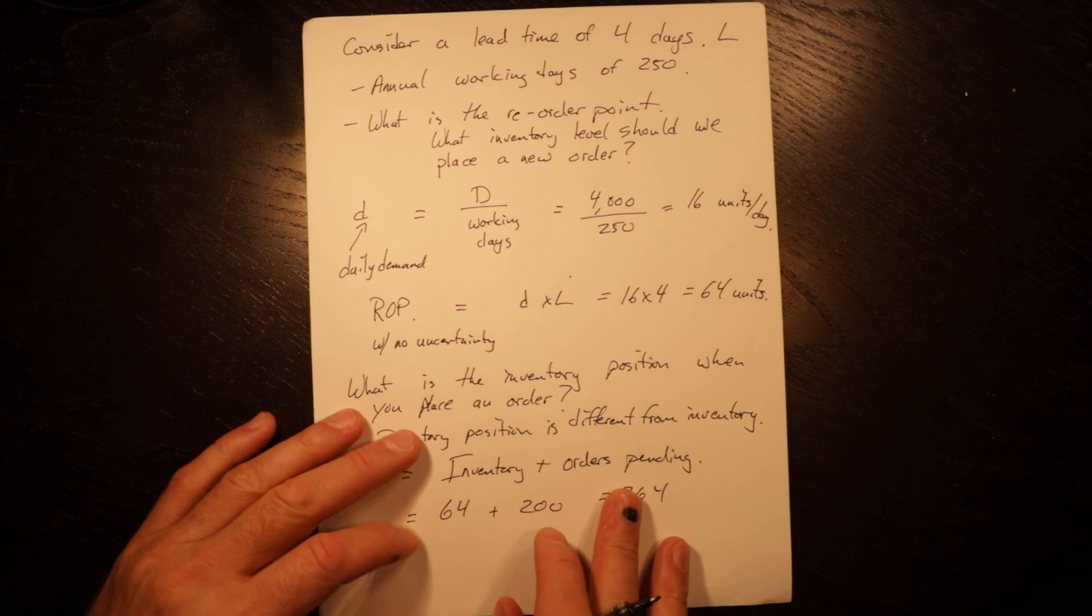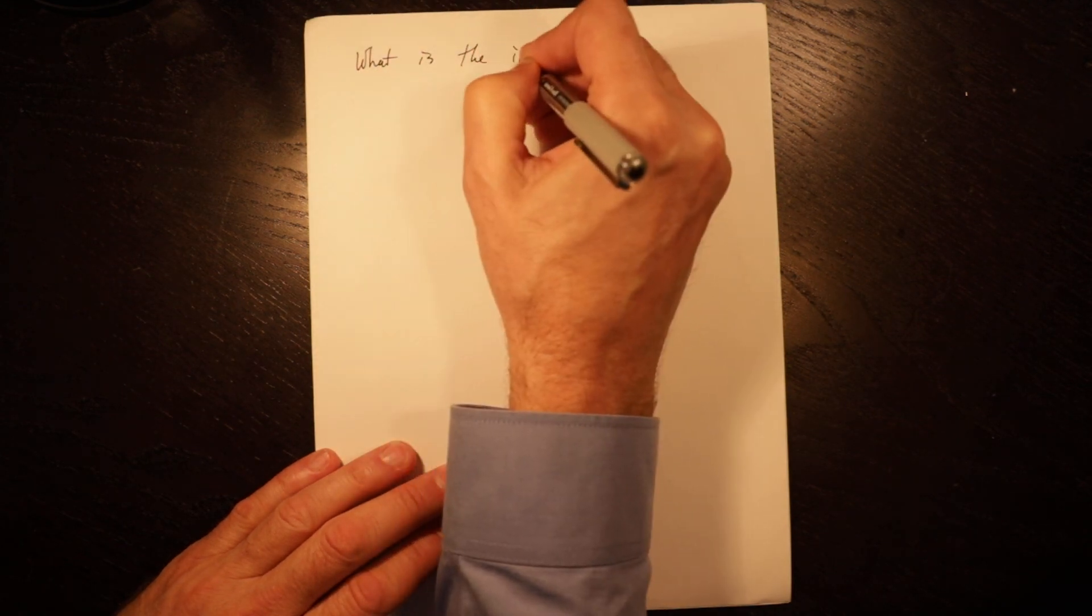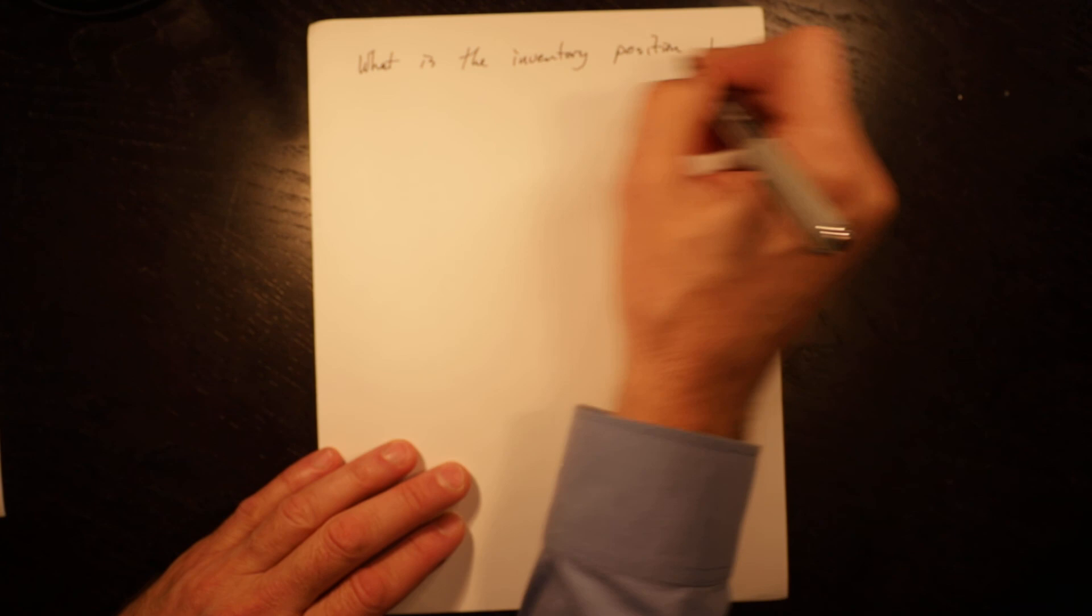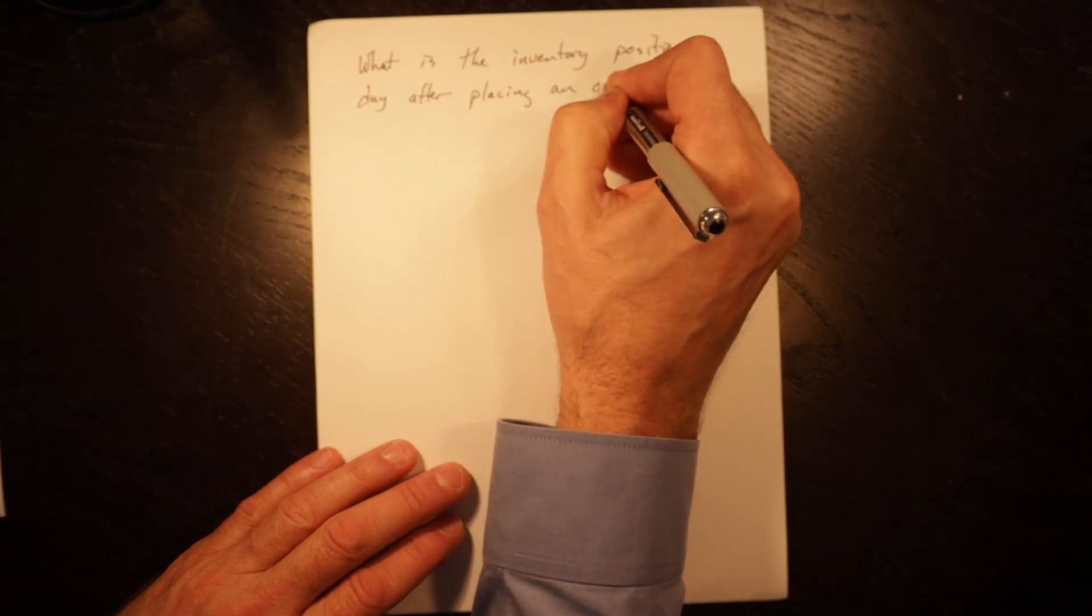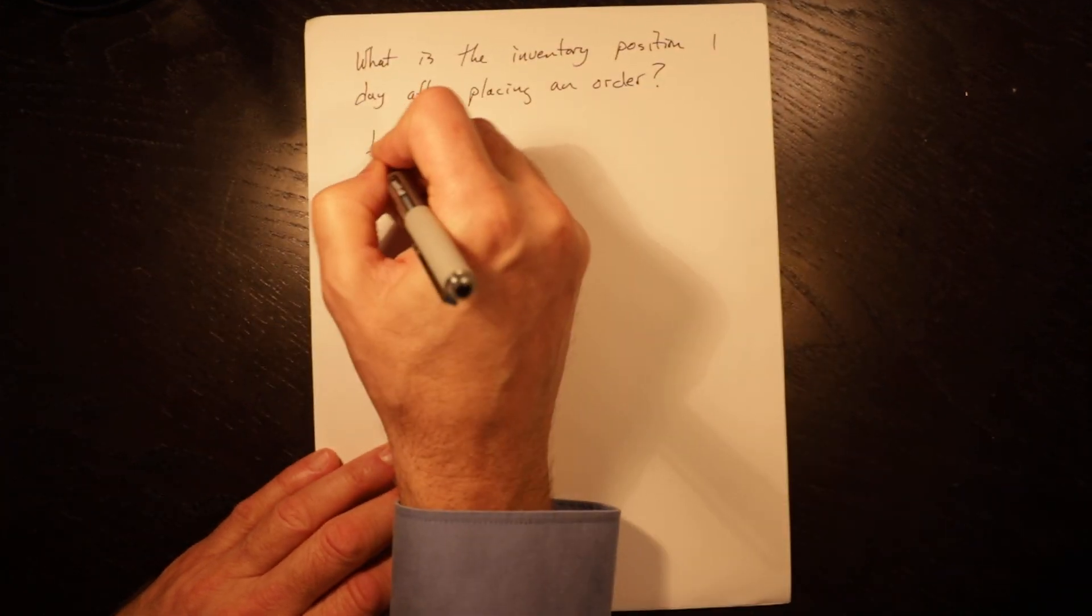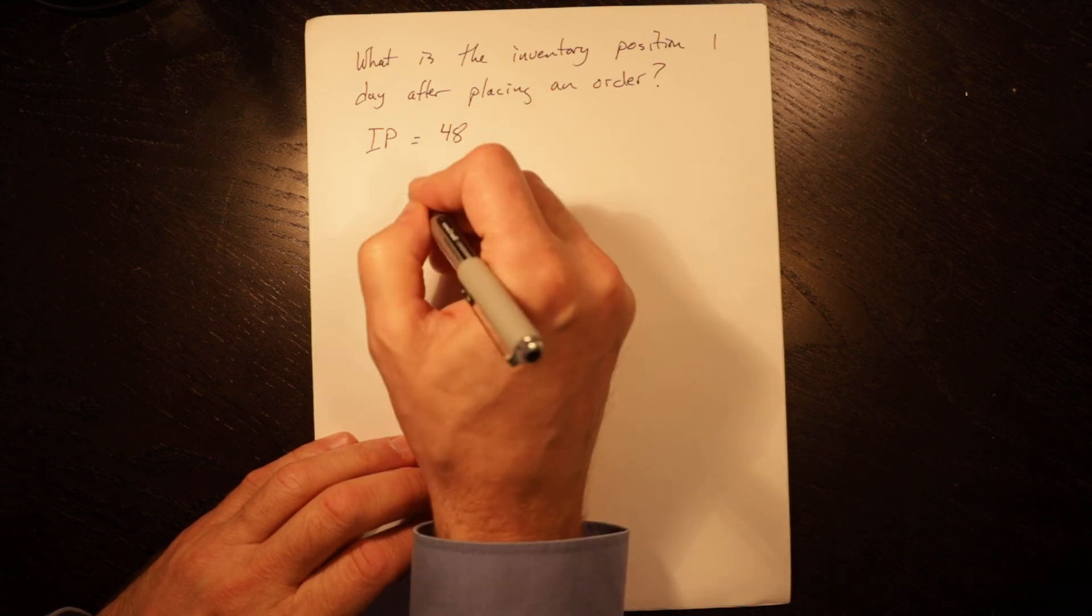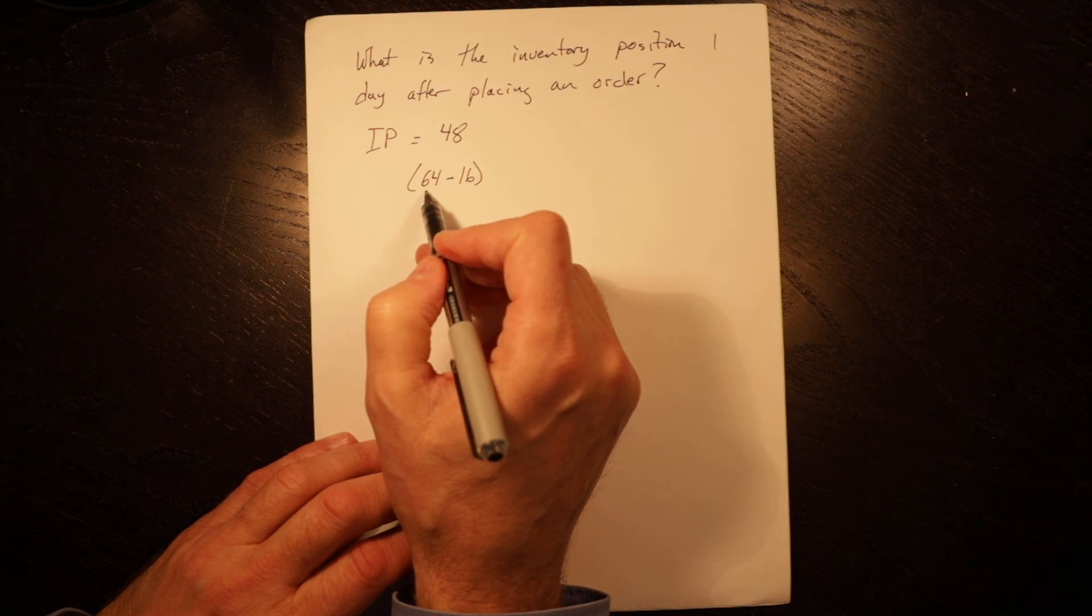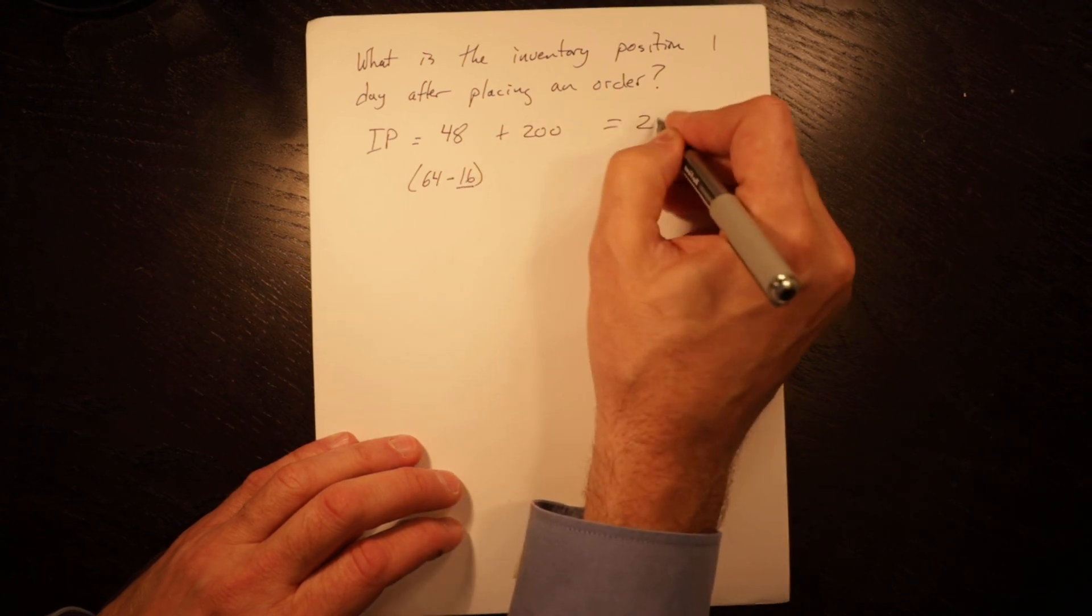If I ask you what is the inventory position one day after placing an order? Inventory position would equal 48, which is 64 minus 16. You had 64, you placed an order, you use 16 in a day, plus 200 equals 248.